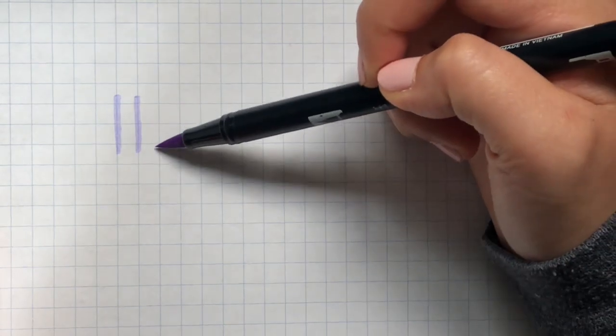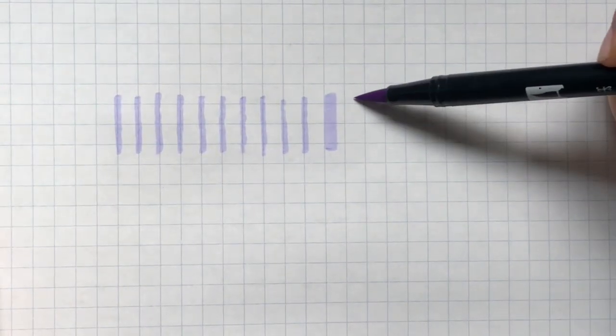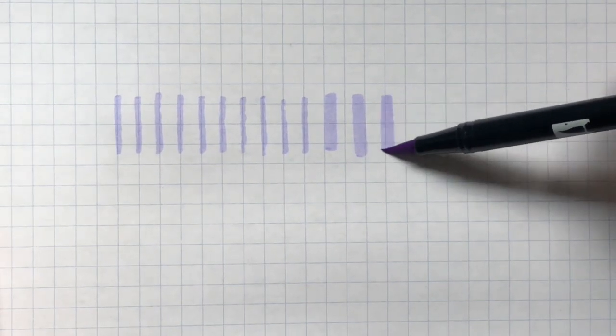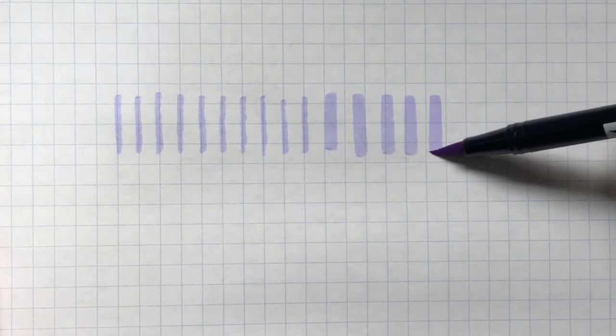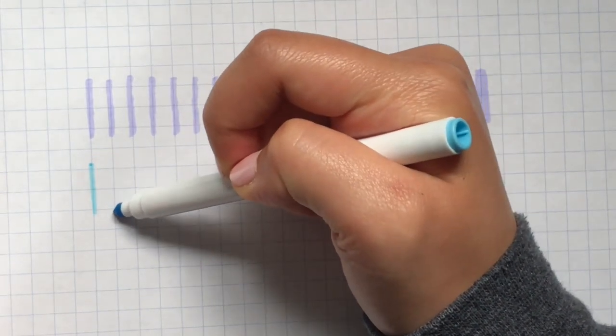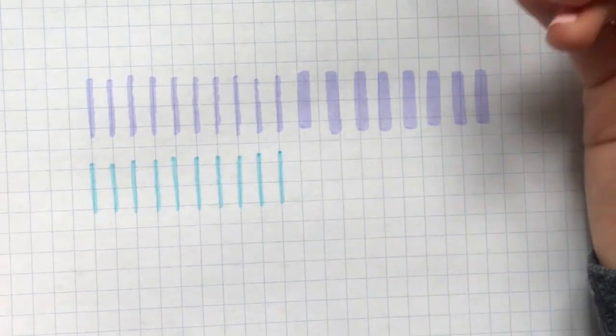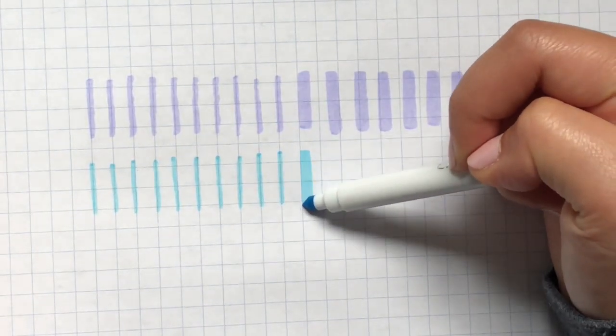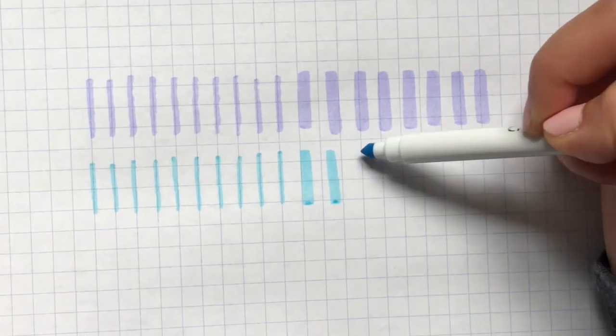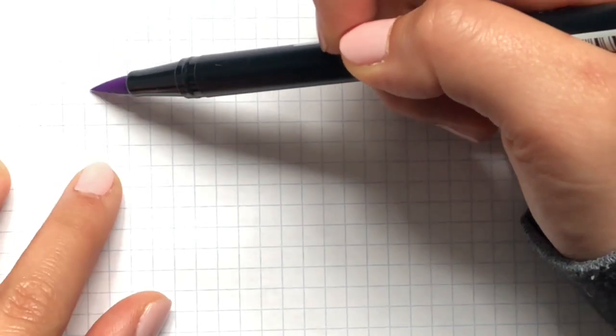So the first exercise we're gonna do is thin upward strokes. This is practicing control and you're also going to practice thicker downward strokes. Again here I am doing thin upward strokes to practice controlling using a very light touch with your marker, and thicker downward strokes on the thicker part of your marker on the diagonal as you can see here.